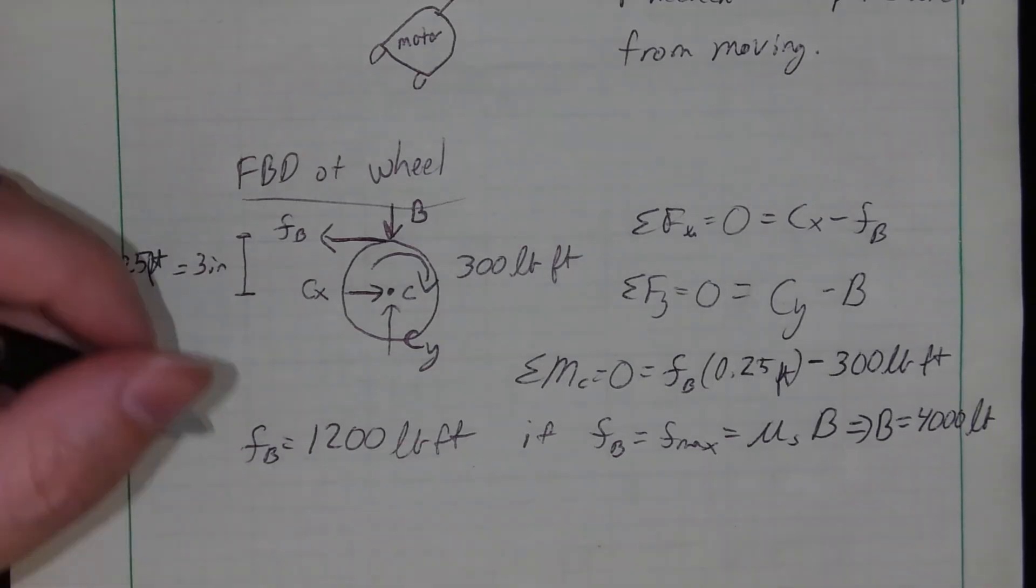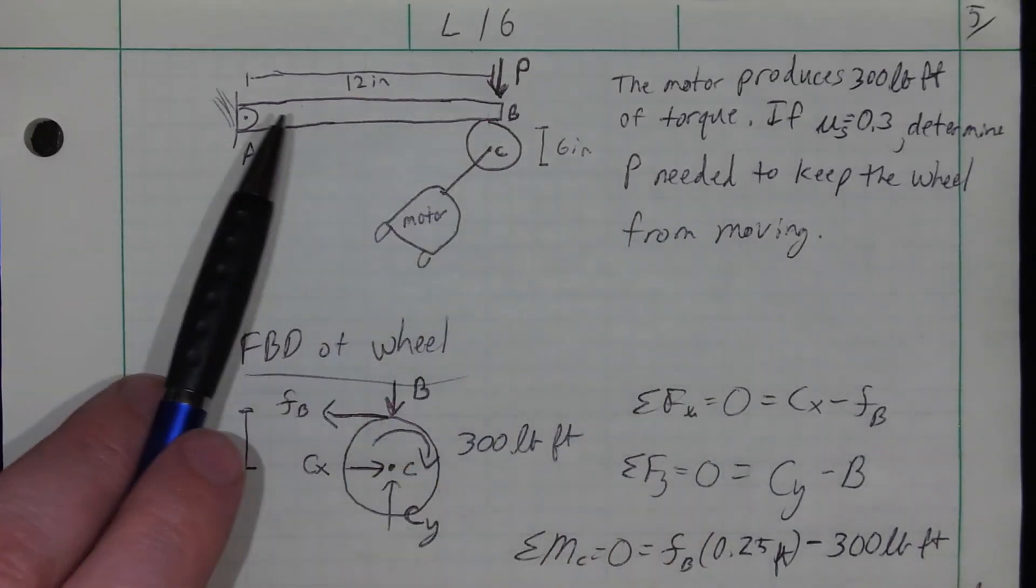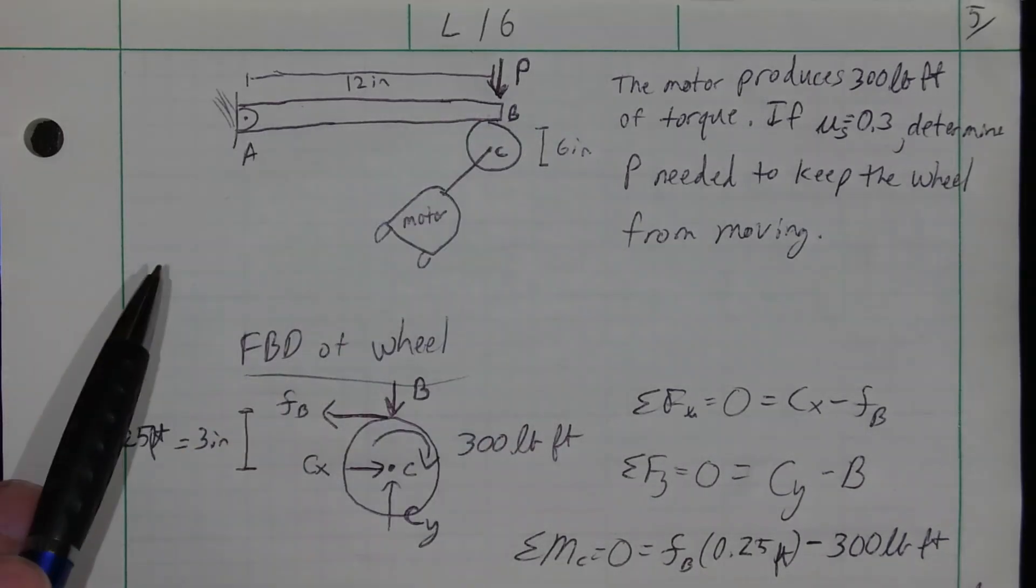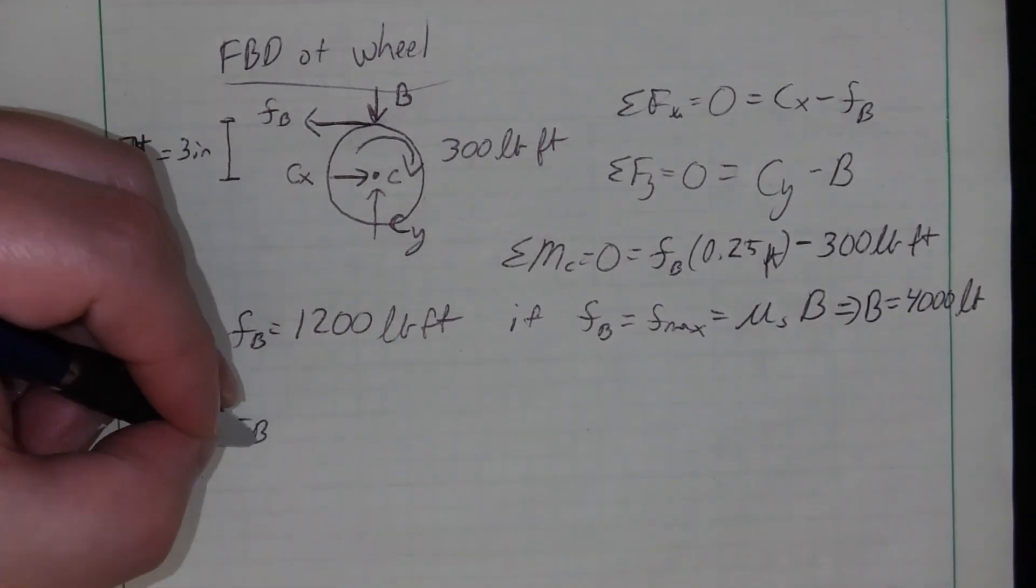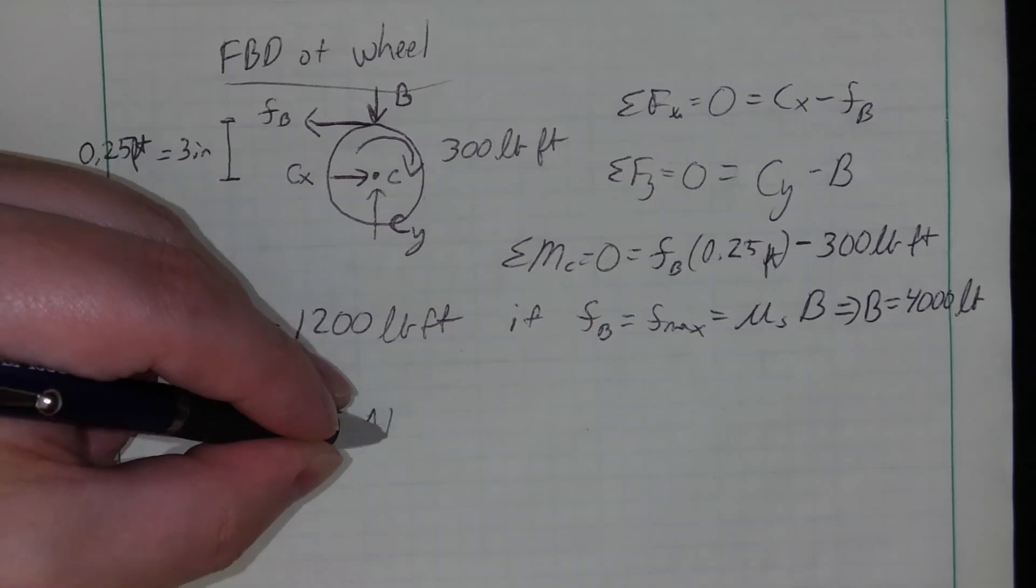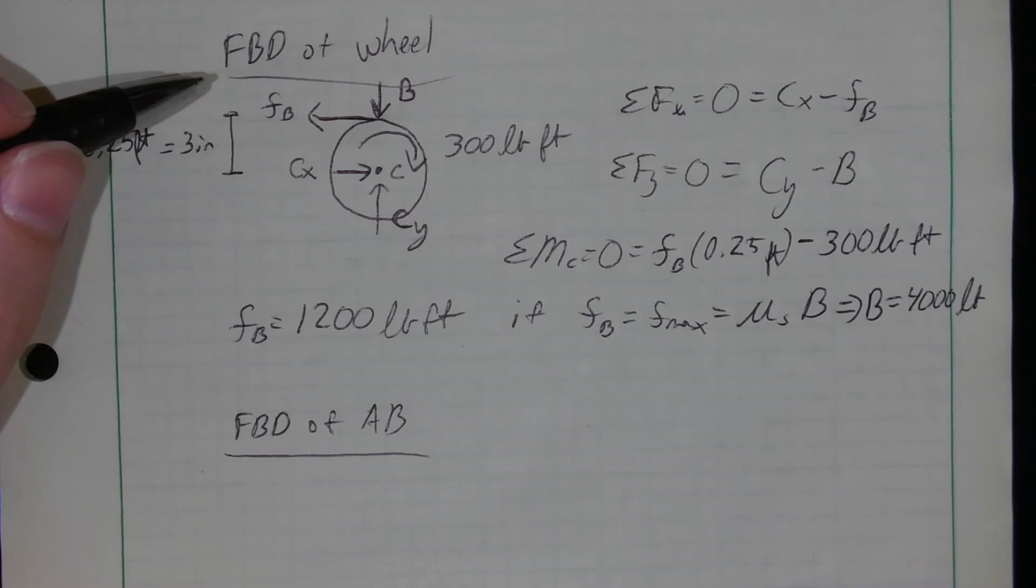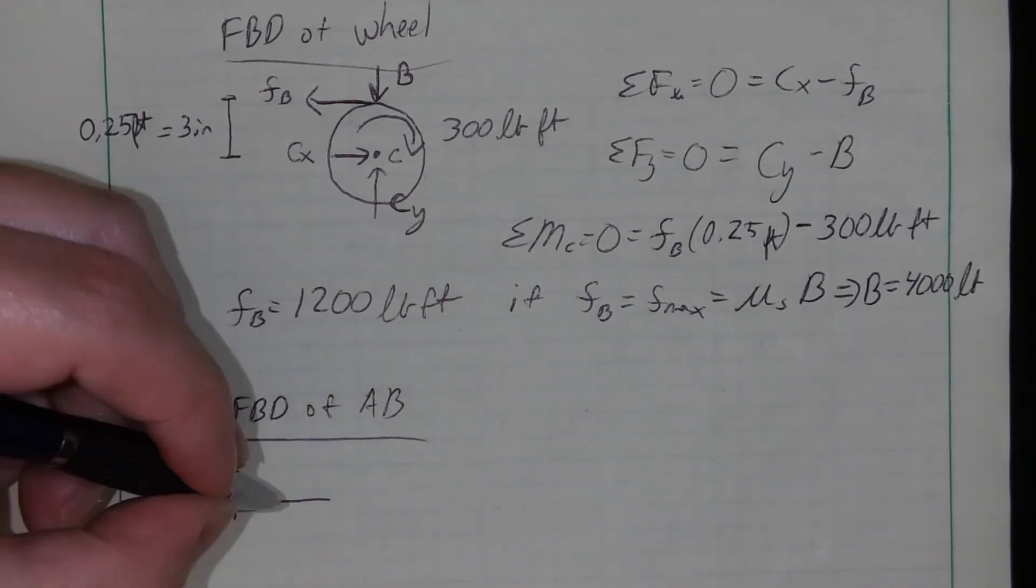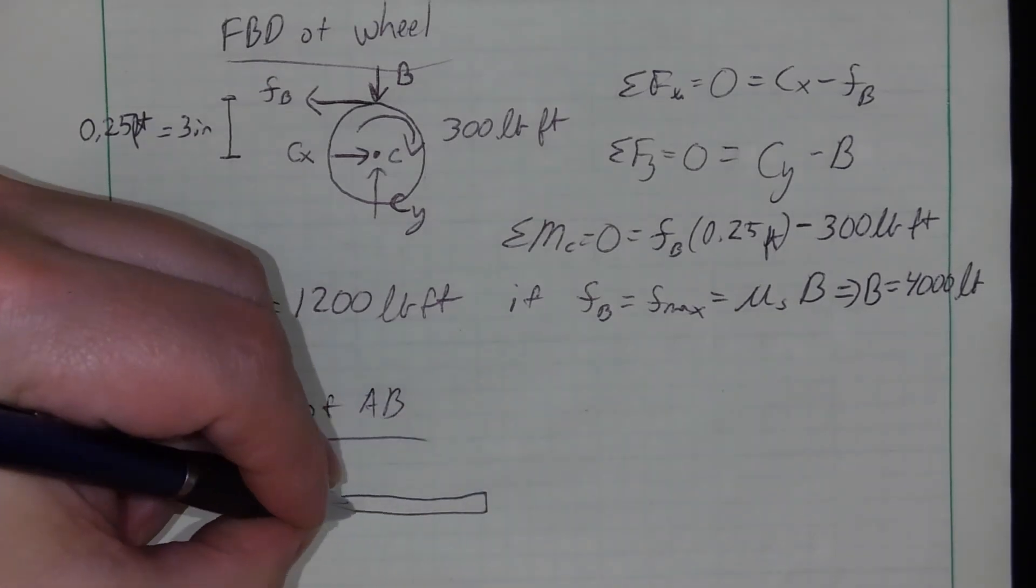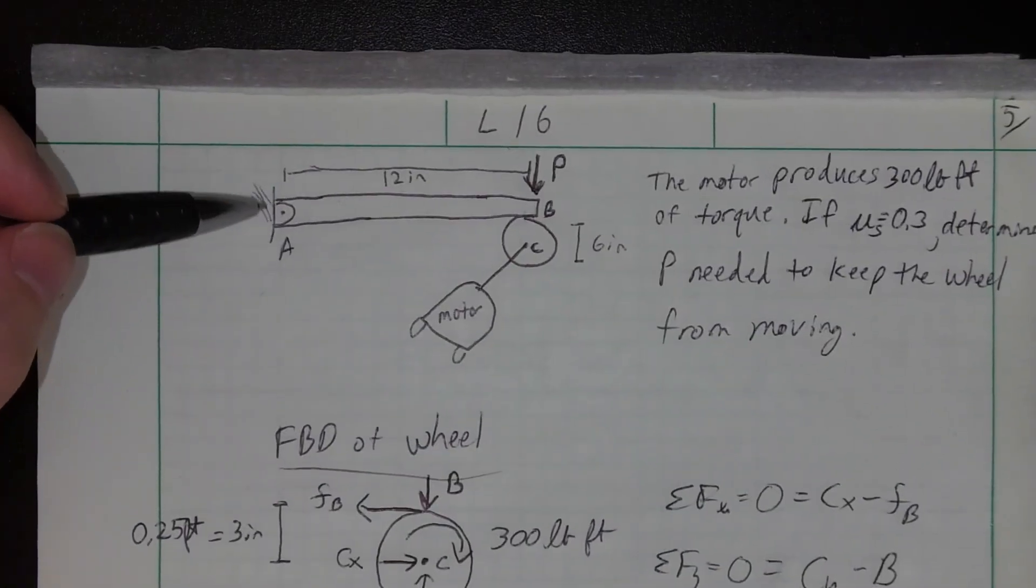Okay, now if I look at what am I looking for, I'm looking for P. Where does P occur? P is applied to this beam here. Okay, so if P is applied to that beam there, let's look at the beam. Let's look at the free body diagram of AB then. Do I need CX and CY? I don't think so, but let's look at AB here and see if I've got everything I need to know at that point.